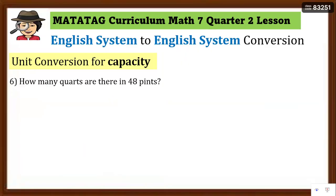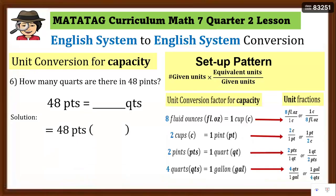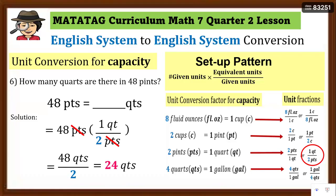Number 6: How many quarts are there in 48 pints? The given unit is pints going to quarts, so pints must be in the denominator and quarts in the numerator — that is 1 quart over 2 pints. Cancel the pints, then multiply: 1 quart times 48 equals 48 quarts divided by 2, which equals 24 quarts. So there are 24 quarts in 48 pints.